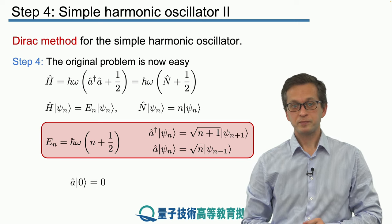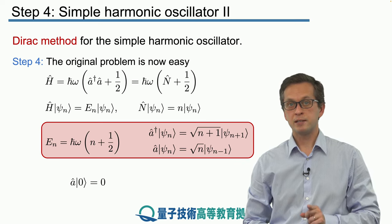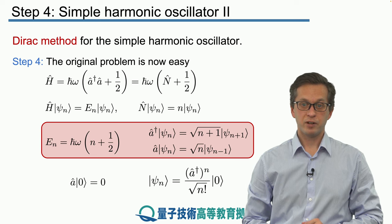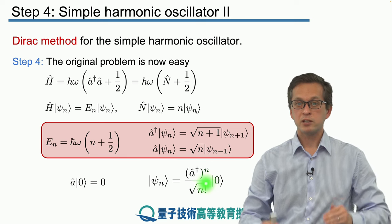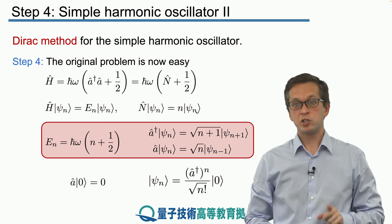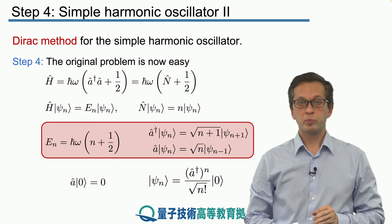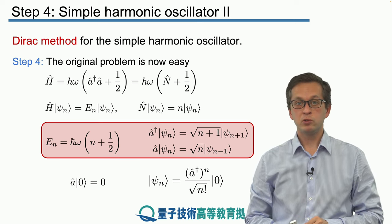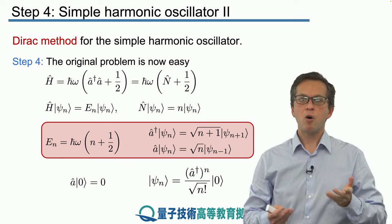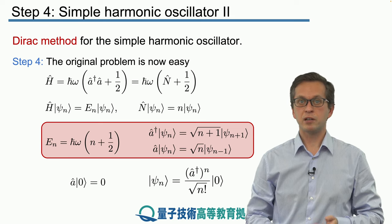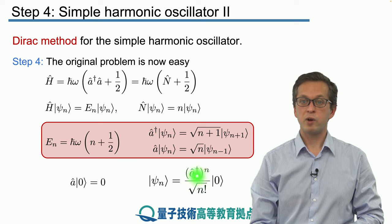What you must also remember is that the annihilation operator applied to the lowest energy eigenstate ket 0 is equal to the number 0. Furthermore, starting from this lowest energy eigenvector, we can generate all higher energy eigenvectors psi n by subsequent application of a dagger. To obtain psi n, we start from the lowest energy eigenstate and apply the creation operator n times, keeping in mind that we must renormalize the vector by a factor of square root of n factorial.